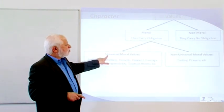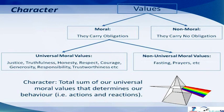There are two kinds of moral values, universal moral values and non-universal moral values. We leave the non-universal moral values out and stick to universal moral values. No matter what background, what color, what country we come from, these are universally accepted throughout the world. And these are qualities like justice, truthfulness, honesty, respect, courage, responsibility, generosity, trustworthiness, etc.